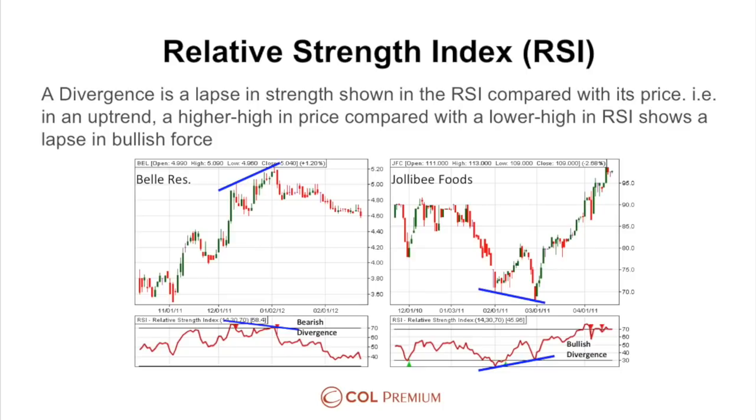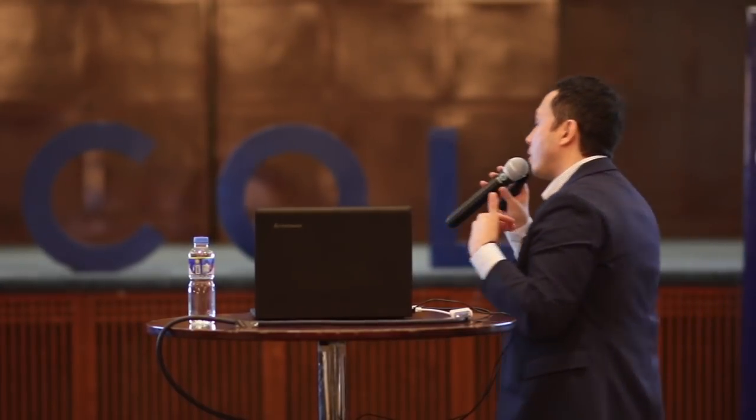Divergence is one of the leading indicators of reversals. Besides using your uptrend line or reversal patterns, one of the earliest ways you can sell at the top — or one of the techniques you can use for buying at the bottom — is using divergence techniques.